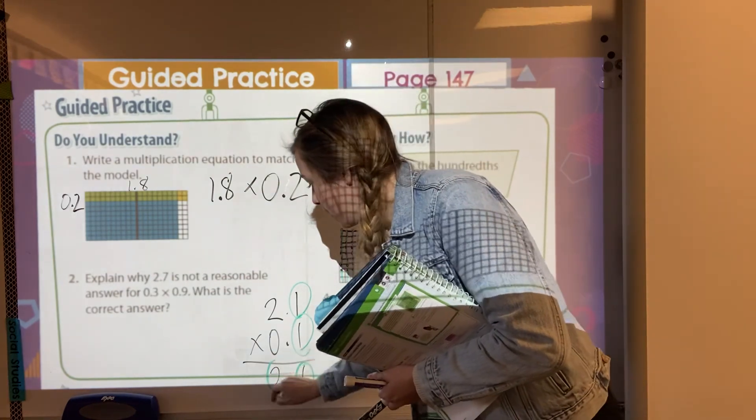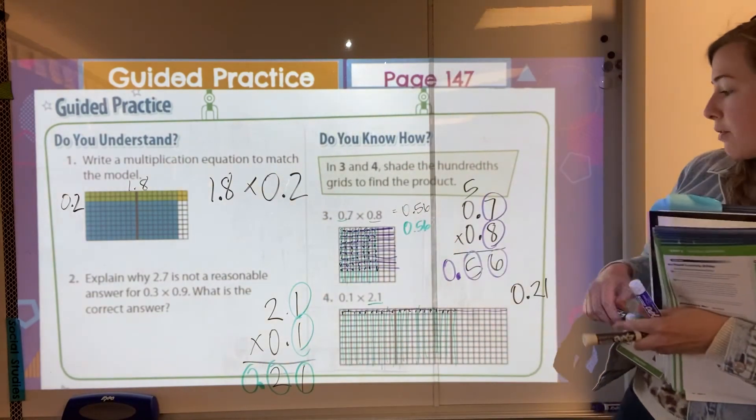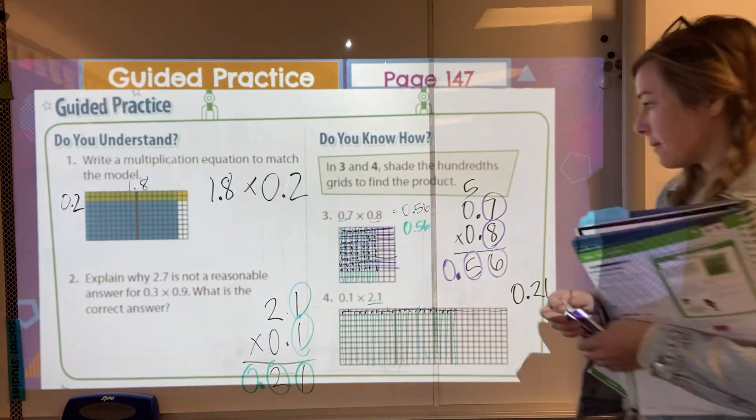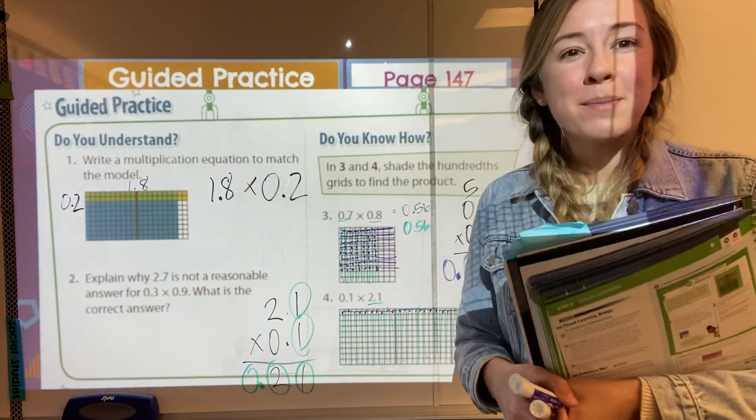put in my decimal point and my zero goes before it, you still get that same 21 hundredths there. Okay. We will practice a couple more in group. Don't forget your problems on Pearson. We will practice a couple more in group.